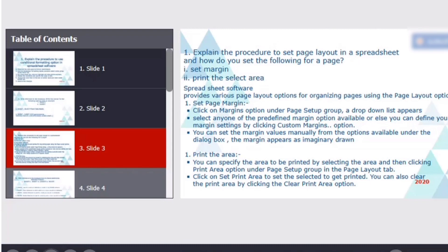These two options we're going to explain now. Set page margin. Click on the margin option under the page setup group. A drop down list appears. So margin option available under page setup group. Select any one of the predefined margin option available or else you can define your own margin settings by clicking on custom margin. You can set the margin values manually from the options available under the dialog box. The margin appears as imaginary line. It cannot be seen.